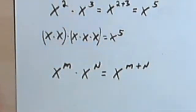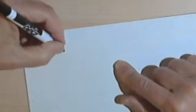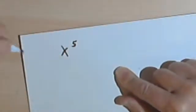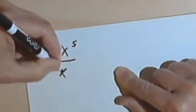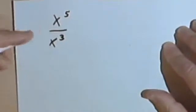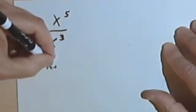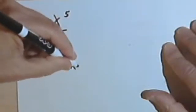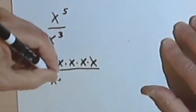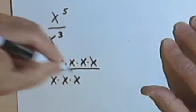That's multiplication. Now let's look at division. Let's say that we want to divide x to the fifth by x to the third. So what are we really doing? x to the fifth is x times x times x times x times x, and x to the third is x times x times x.